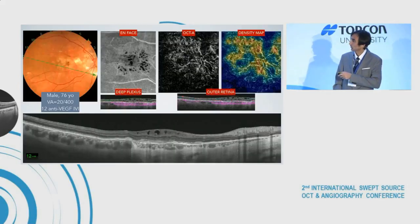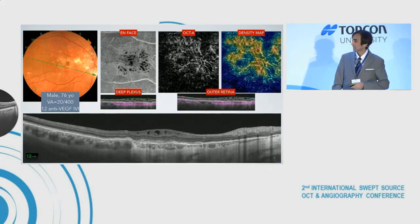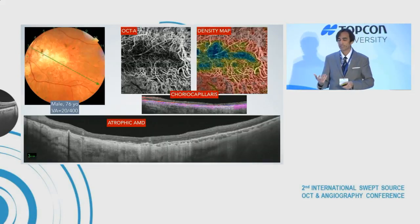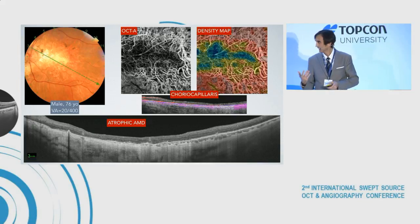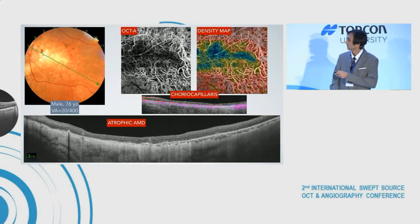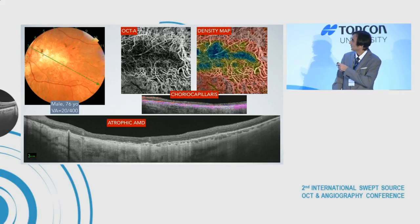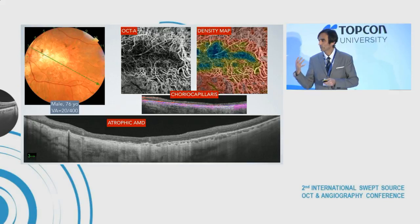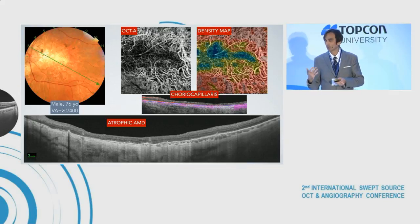This is a chronic case with mild cysts in the inner retina that don't need to be treated. And it's very important to know that in patients with severe atrophy of the RPE, choroidal vessels should not be mixed up with choroidal new vessels. These are choroidal vessels, not choroidal new vessels.